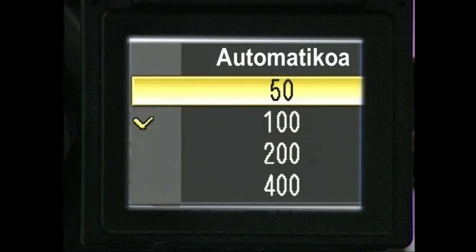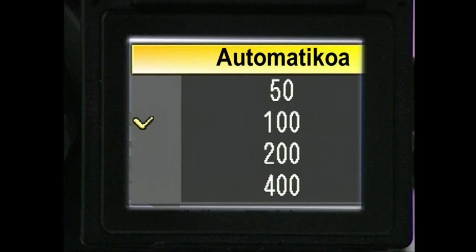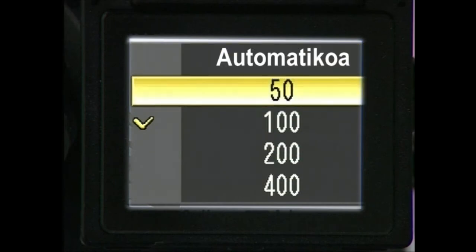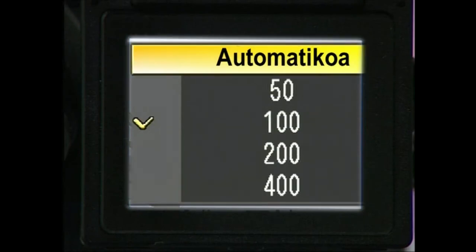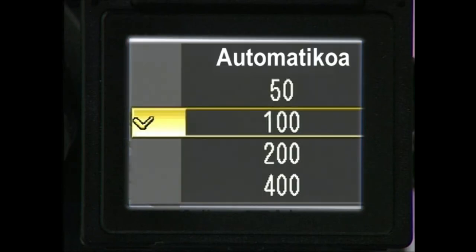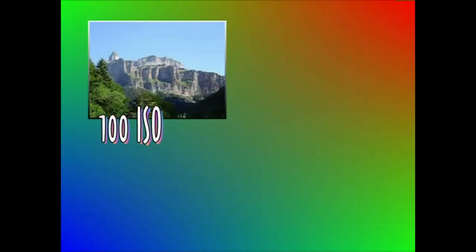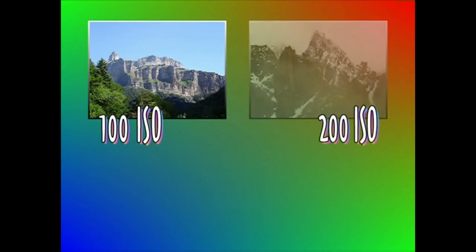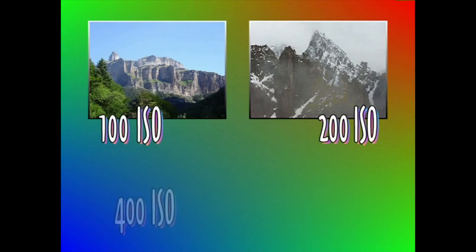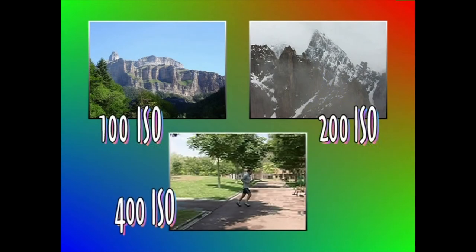Argazkiak ateratzerakoan, ISO balio handiagoekin balio txikiekin baino obturazio lastertasun handiagoz lan egiteko aukera izango dugu. ISO 100 balioa egun eguzkitsuetan erabiltzeko da egokia. ISO 200 balioa egun goibeletan erabiltzeko da egokia. ISO 400 balioa mugitzen ari diren objektuen eta pertsonaien argazkiak egiteko eta barrualdetan erabiltzeko da egokia.